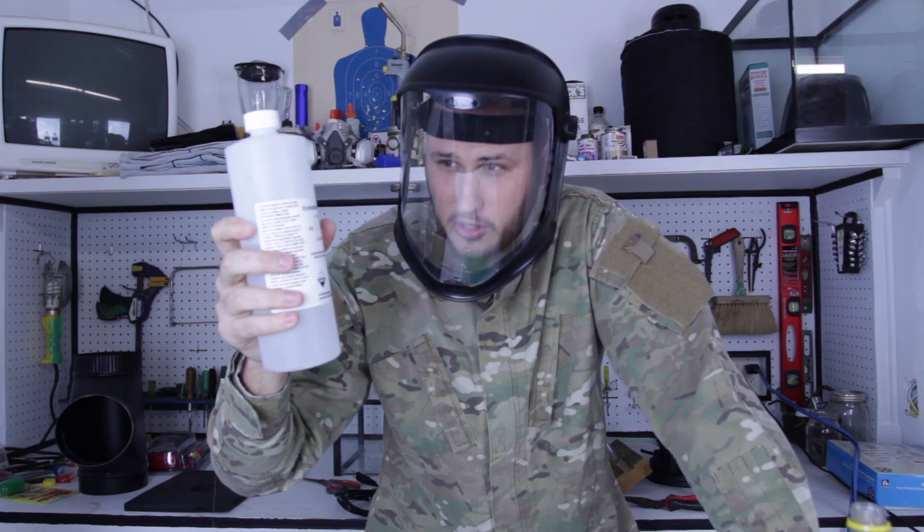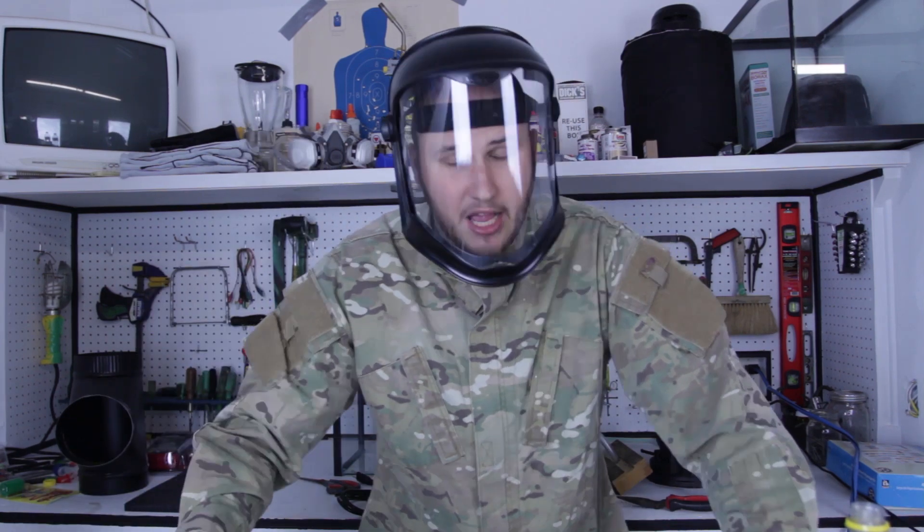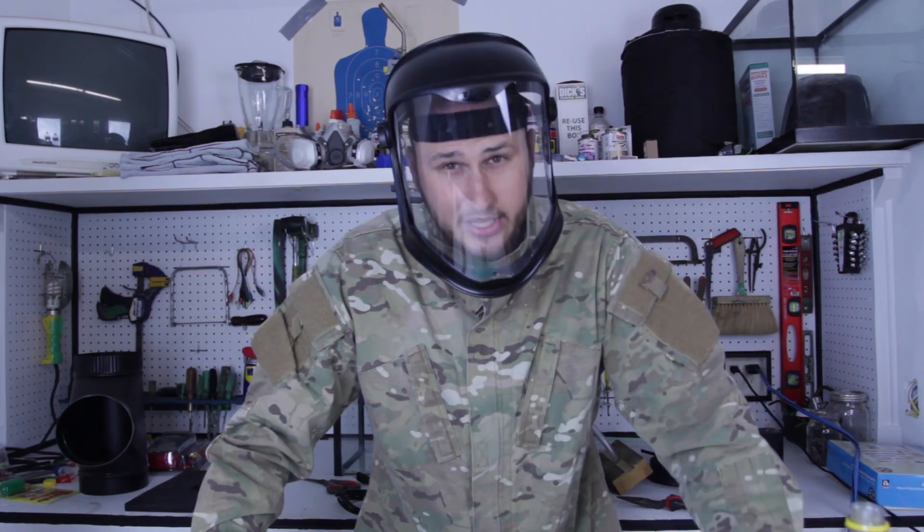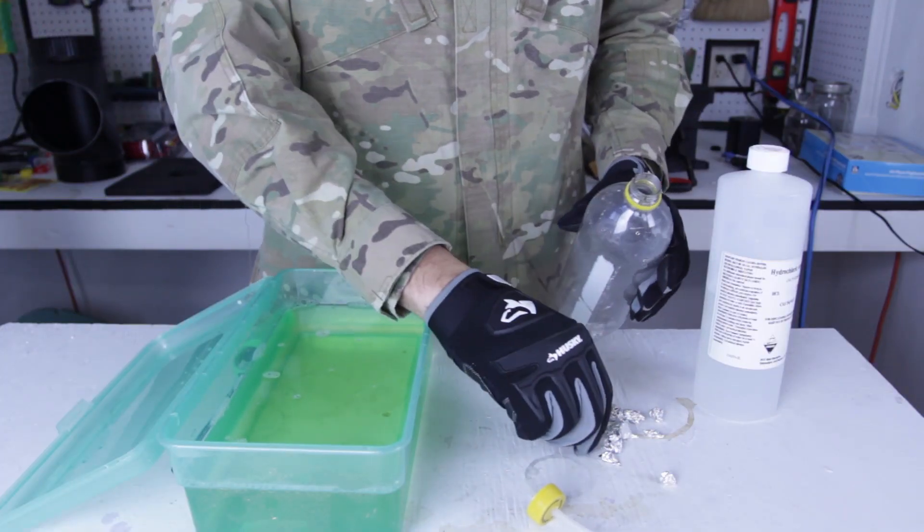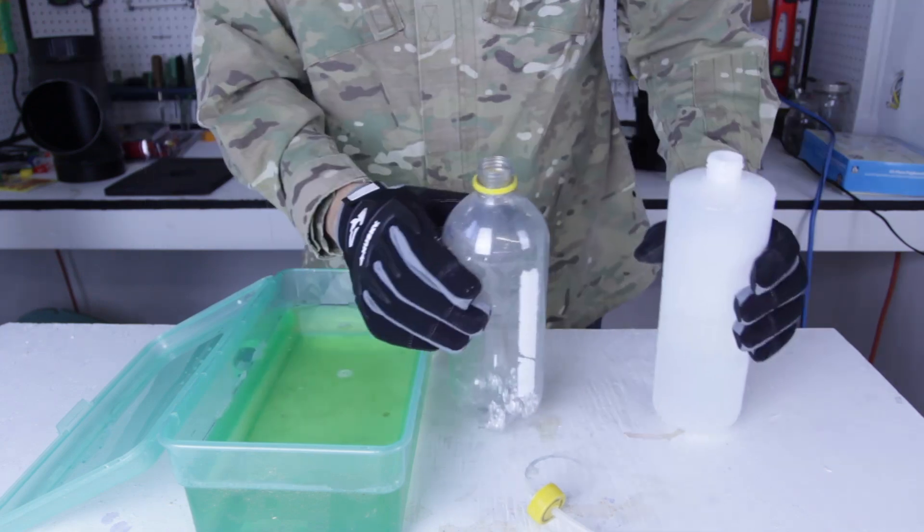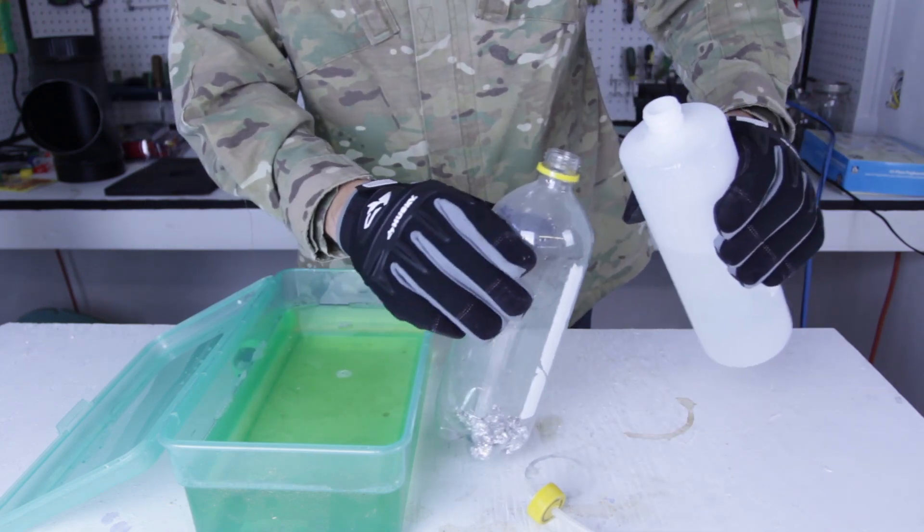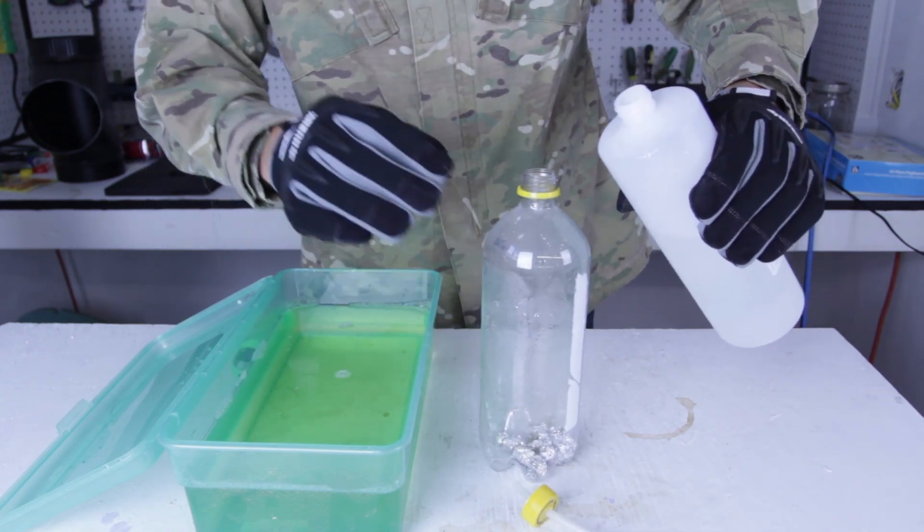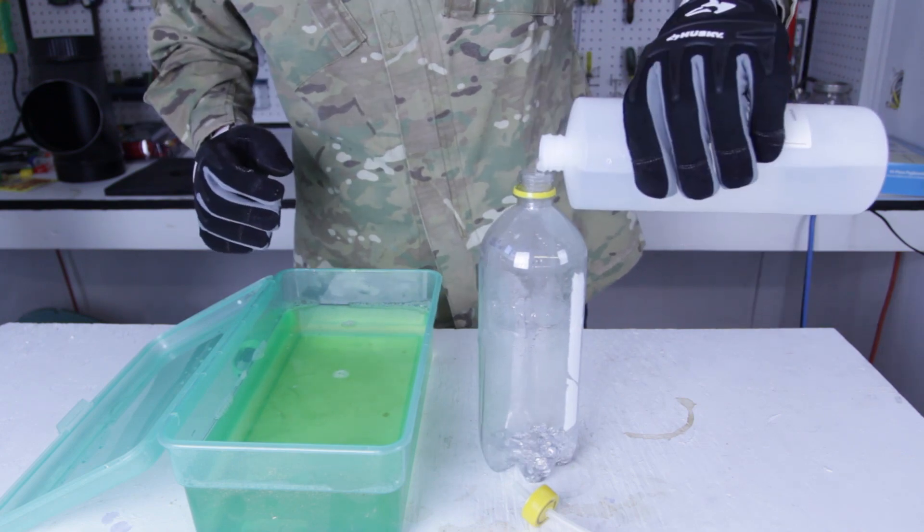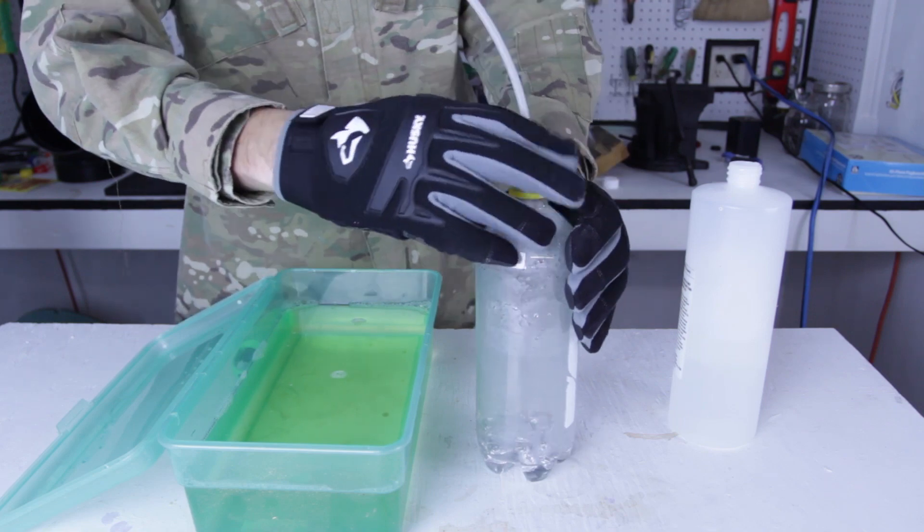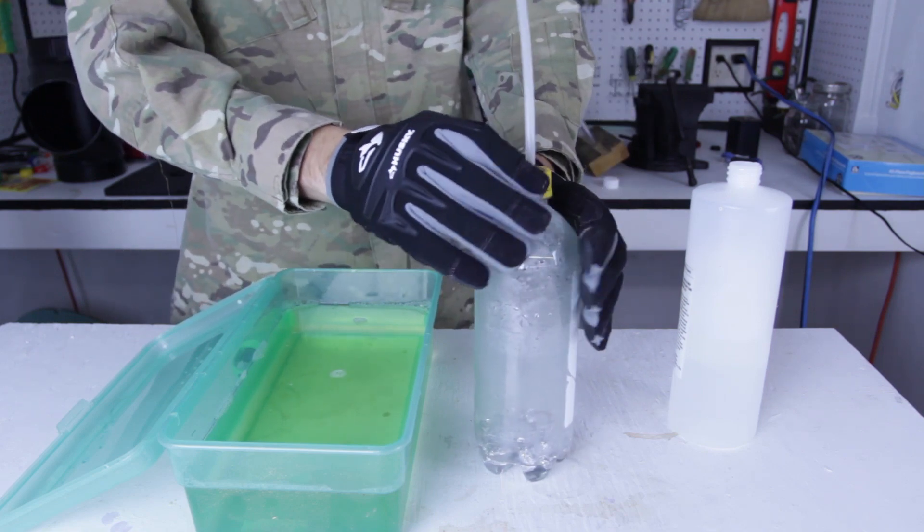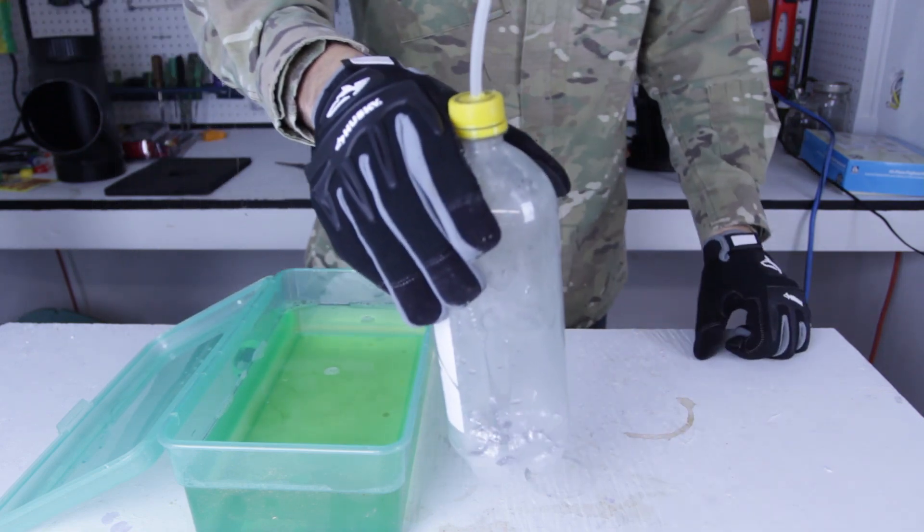I'm going to be using hydrochloric acid, 37%, and aluminum foil. Let's check this out. So what I'm going to do is put a bunch of aluminum foil into the bottle, put a little bit of hydrochloric acid in this bottle, close the lid, then wait till the reaction starts.